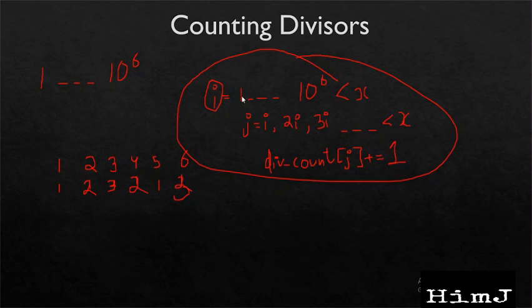So for i equals to 1, this loop will run for x times. And for i equals to 2, this will run for x/2 times. Similarly for 3, it will run x/3 times. Until 1, which is x/x times.